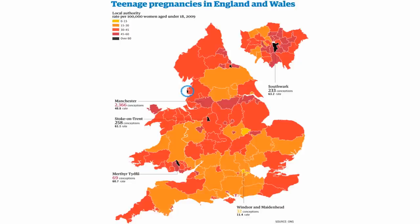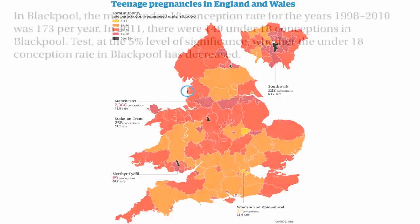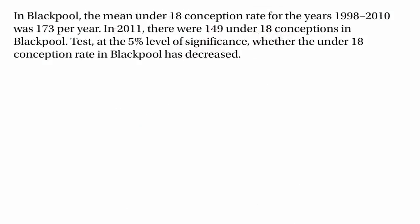We're going to look at a particular example involving Blackpool, which is one of the nation's black spots where the teenage pregnancy rate is particularly high. In Blackpool, the mean under-18 conception rate for the years 1998 to 2010 was 173 per year. But in 2011 there were 149 under-18 conceptions in Blackpool. We're going to test at the 5% level of significance whether the under-18 conception rate in Blackpool has decreased.